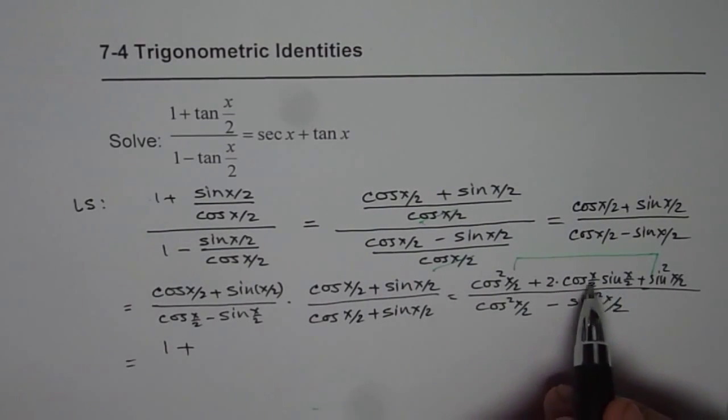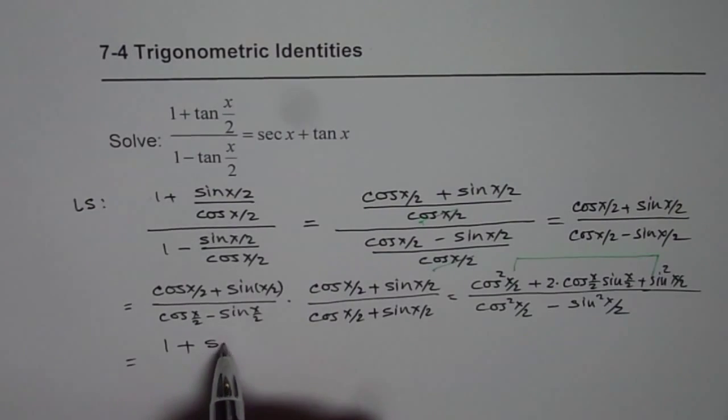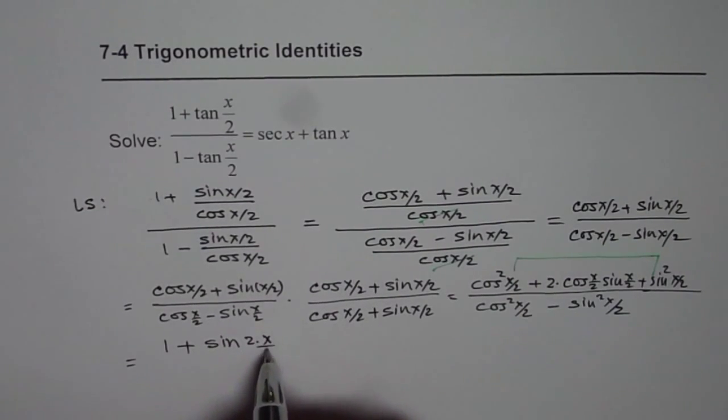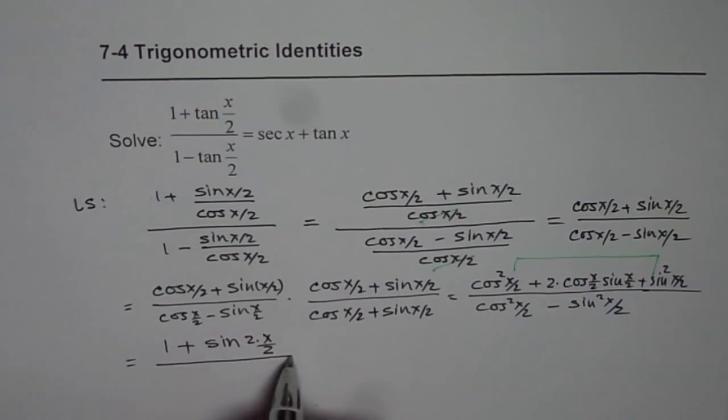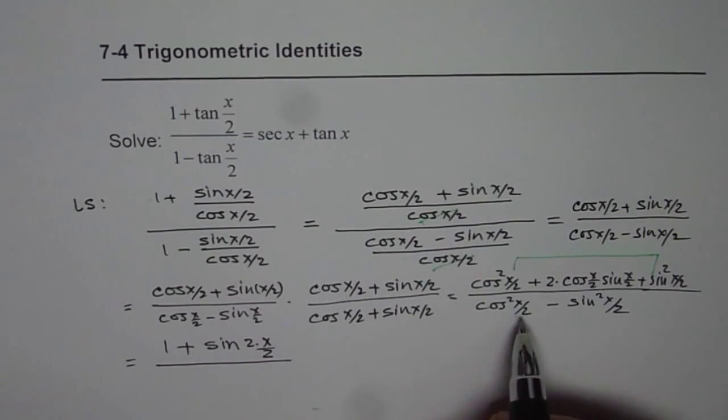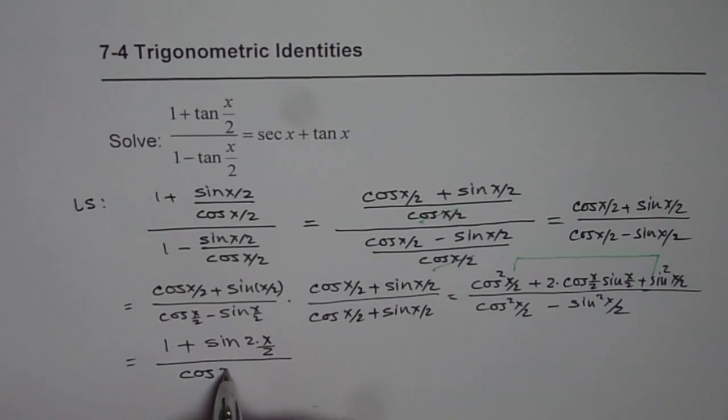We get sin(x) divided by cos^2(x/2) - sin^2(x/2), which is cos(2·x/2).